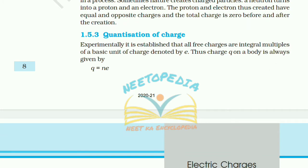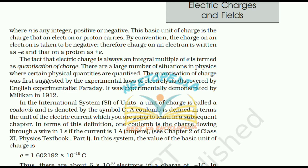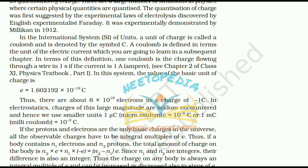Sometimes nature creates charged particles — a neutron turns into a proton and an electron. The proton and electron thus created have equal and opposite charges, and the total charge is zero before and after the creation. 1.5.3 Quantization of Charge: Experimentally it is established that all free charges are integral multiples of a basic unit of charge denoted by e. Thus charge q on a body is always given by q = ne, where n is an integer, positive or negative. This basic unit of charge is the charge that an electron or proton carries. By convention, the charge on an electron is taken to be negative, written as −e, and that on a proton as +e.